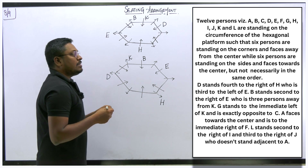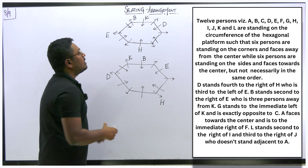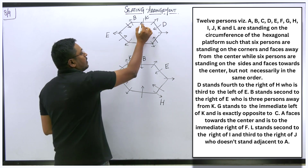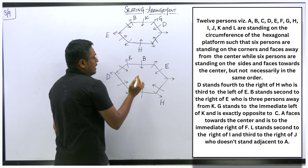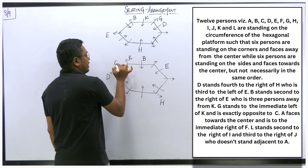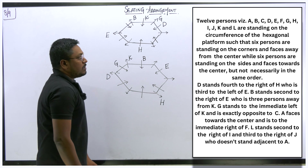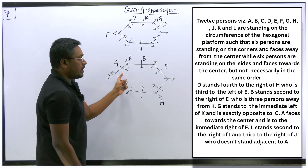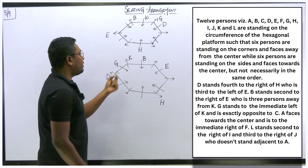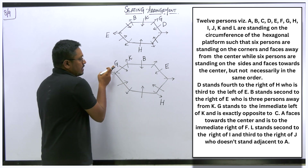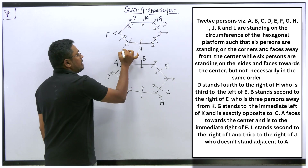G stands to the immediate left of K, and G is exactly opposite to C. So I fix G to the immediate left of K in both diagrams, and then place C directly opposite G in both cases.